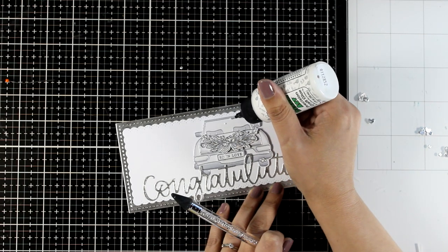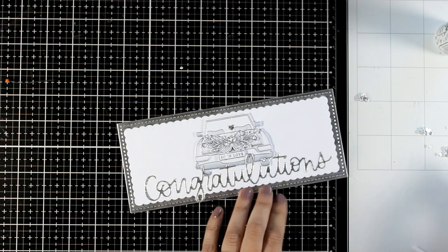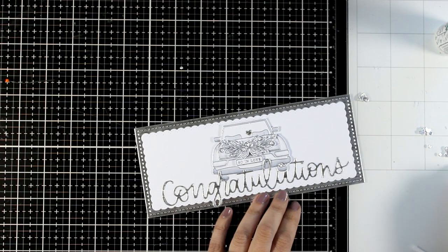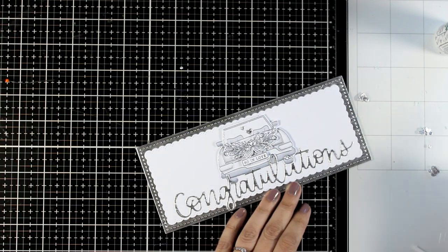I used a die that I had in my stash to cut out tiny little hearts out of the same silver cardstock that I used for the background and the letters and I am just going to stick them down coming out of the car.